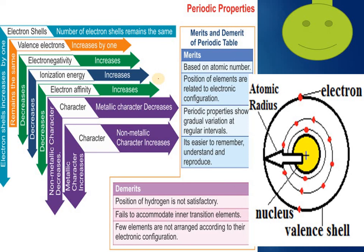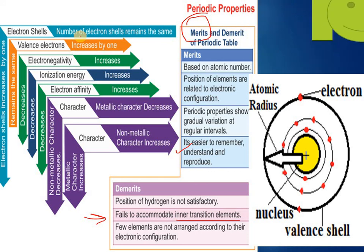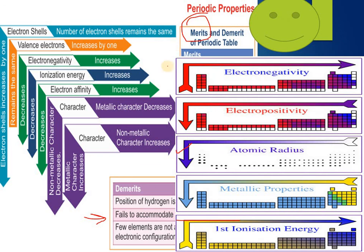The merits of the periodic table include easy recall of atomic numbers, arrangement according to electronic configuration, and gradual trends in periodic properties. Some demerits are the unsatisfactory position of hydrogen, failure to accommodate inner transition elements satisfactorily, and a few arrangements not matching configuration. However, the demerits are not as significant as the merits — this periodic table makes our life easy and helps correlate chemical properties.